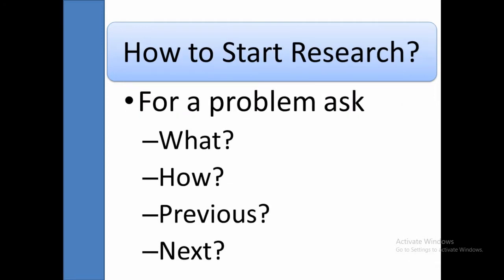Next is how to start the research. Most researchers don't know how to start. Once you have selected your area, first collect literature from recent journal publications. Select a paper from a top-rated, reputed journal in your area — a recent publication, ideally from this year or at least the most recent months. From that paper, you have to ask four questions: What? How? Previous? And Next?